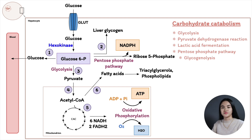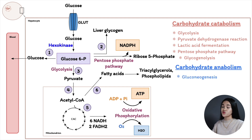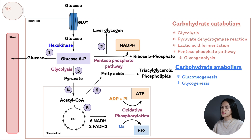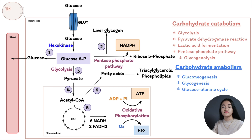Carbohydrate anabolism includes: gluconeogenesis — synthesizing glucose from non-carbohydrate sources; glycogen synthesis or glycogenesis; and the glucose-alanine cycle — converting glucose to pyruvate, then to alanine, which is transported to the liver to form glucose again via gluconeogenesis.